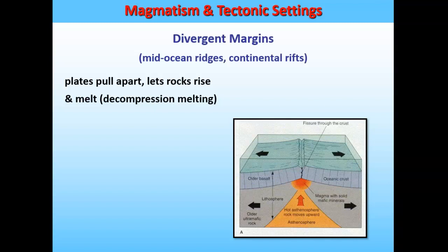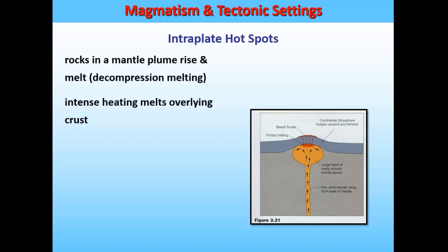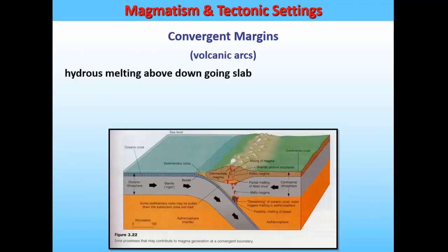The first couple of slides are a review about where the magma comes from. We get different types of melting at different boundaries. At divergent boundaries, it's decompression melting because of convection in the mantle — the result is what we call mafic composition, which I'll elaborate on in the next slides. The ocean crust is what we call mafic. We also get hot spots — Hawaii and Yellowstone are examples — where you can get lots of different compositions depending on what's melting. And we also get magma at subduction zones because adding water changes the chemistry and causes things to melt.